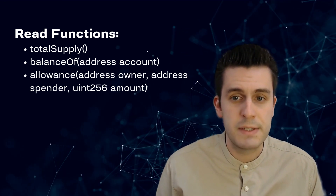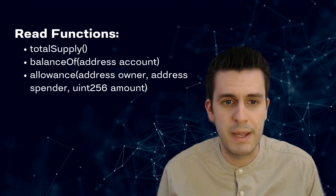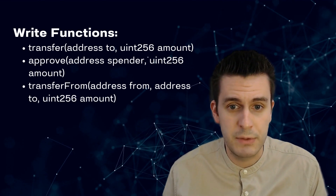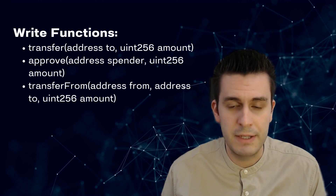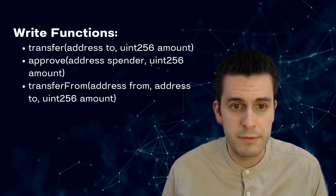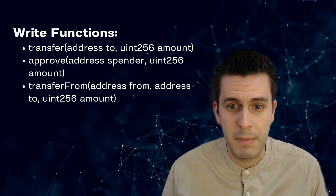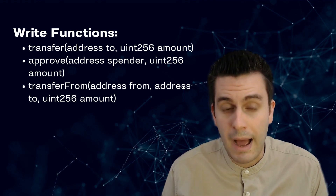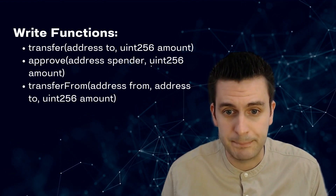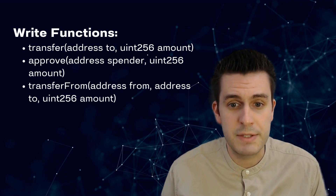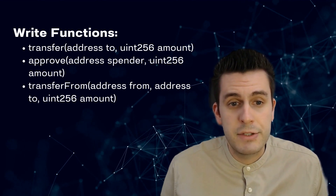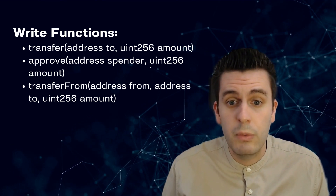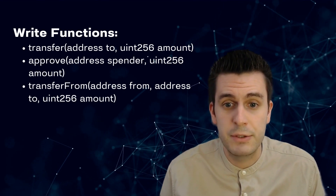Allowance specifies how much the owner allows a spender to use from his tokens. The write functions required by ERC20 are: transfer, which specifies a recipient address and an amount to send; approve, which approves a spender with a specified amount from your balance; and transfer from, which transfers from one account to another using a specified amount — normally only allowed when the owner has already approved the spender.